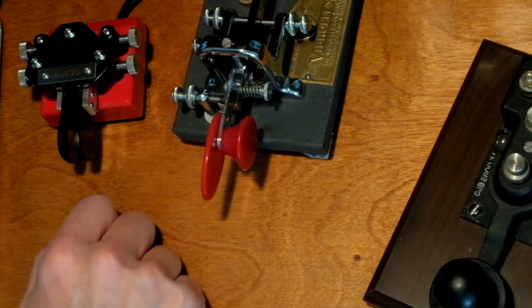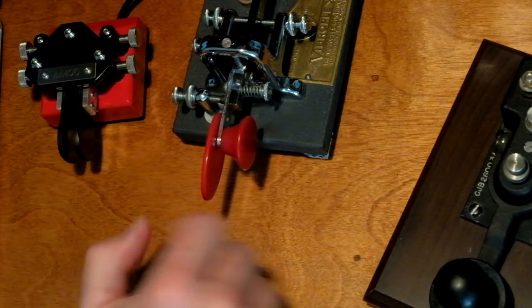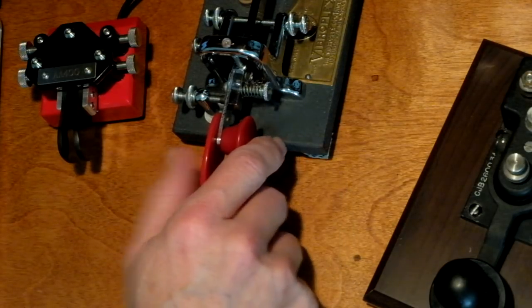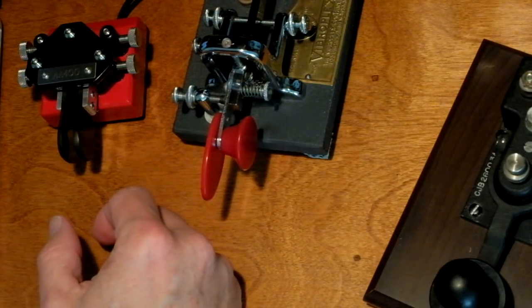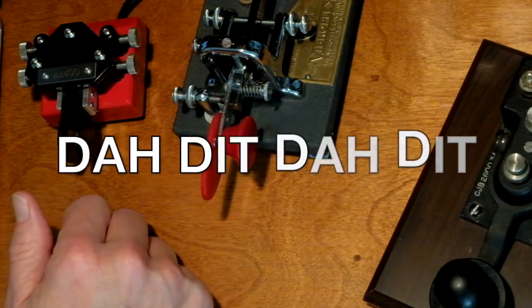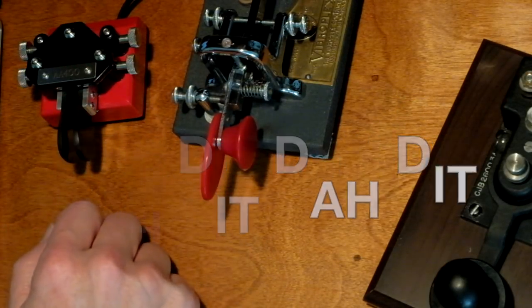So a C in Morse code sounds like da-dit da-dit. It's got a beautiful rhythm when you hear it, right? Go ahead. Shout it out. Da-dit da-dit. You've got nothing to lose at this point.